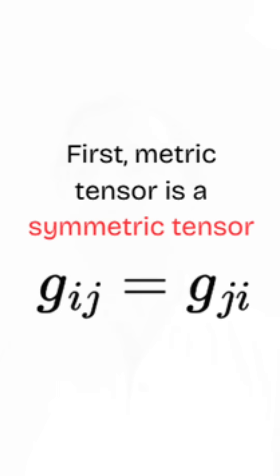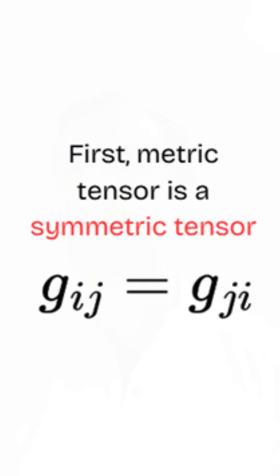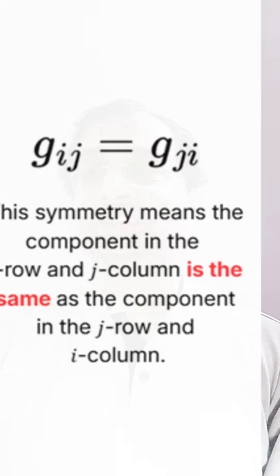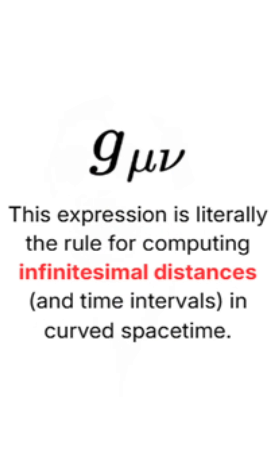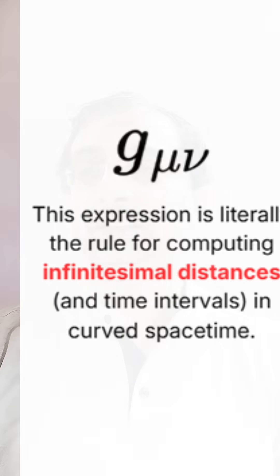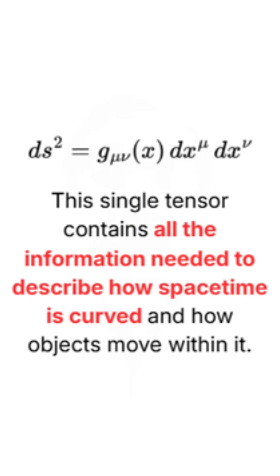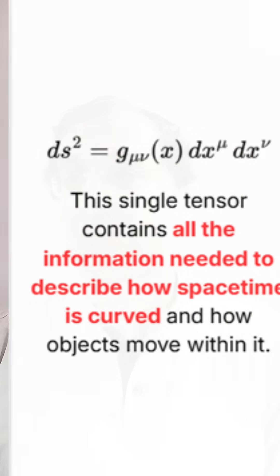The metric tensor has certain very important features. First, it is symmetric in nature, meaning the order of direction does not matter when measuring distances and angles — so G_IJ can be swapped as G_JI. Second, it defines distances, giving the infinitesimal distance between two nearby points, and thereby determines the geometry of space. The metric tensor encodes whether the space is flat or curved.